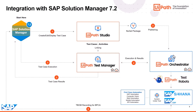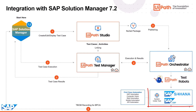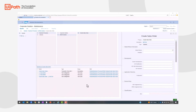Once this is set up, you can then execute the test automation from SAP Solution Manager, which would automatically send a request to UiPath Orchestrator via test manager. The orchestrator will find the next available test robot and run the test automation job. Once the job is complete, the test results will be captured and written back to the SAP Solution Manager.